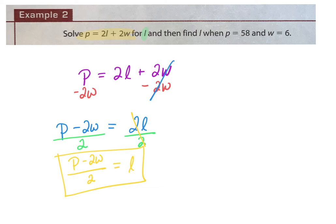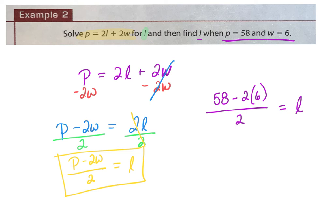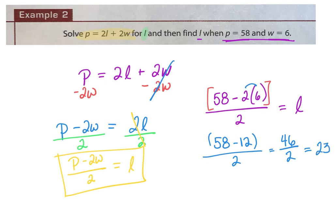They have a second part: they want me to find L when they give me values to plug in. I'm going to take this new equation and plug in 58 for P and 6 for W. So I have 58 minus 2 times 6, divided by 2. Now I do order of operations — the numerator is grouped. 2 times 6 is 12; 58 minus 12 is 46; 46 divided by 2 gives me 23. So L is 23 when the perimeter is 58 and the width is 6.